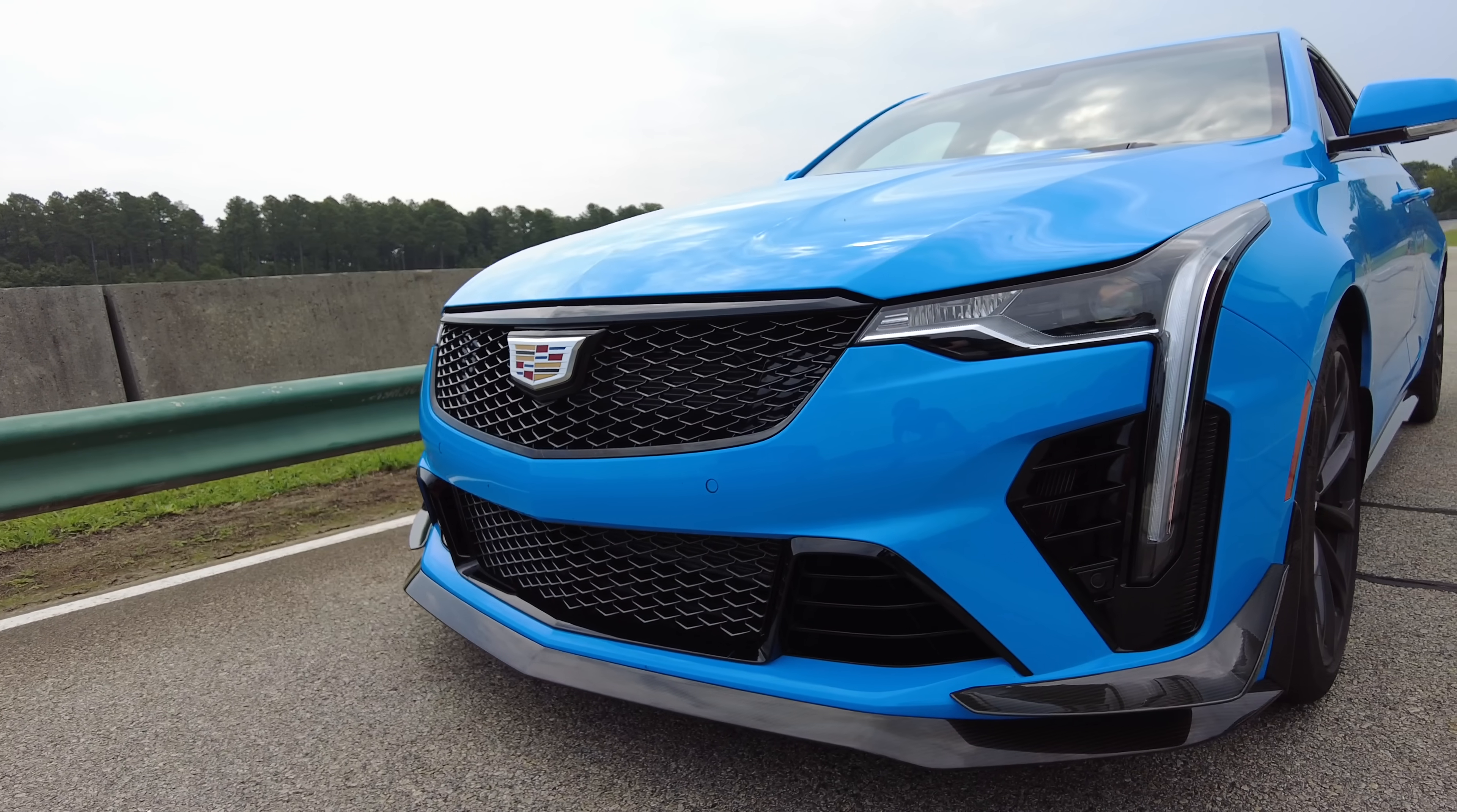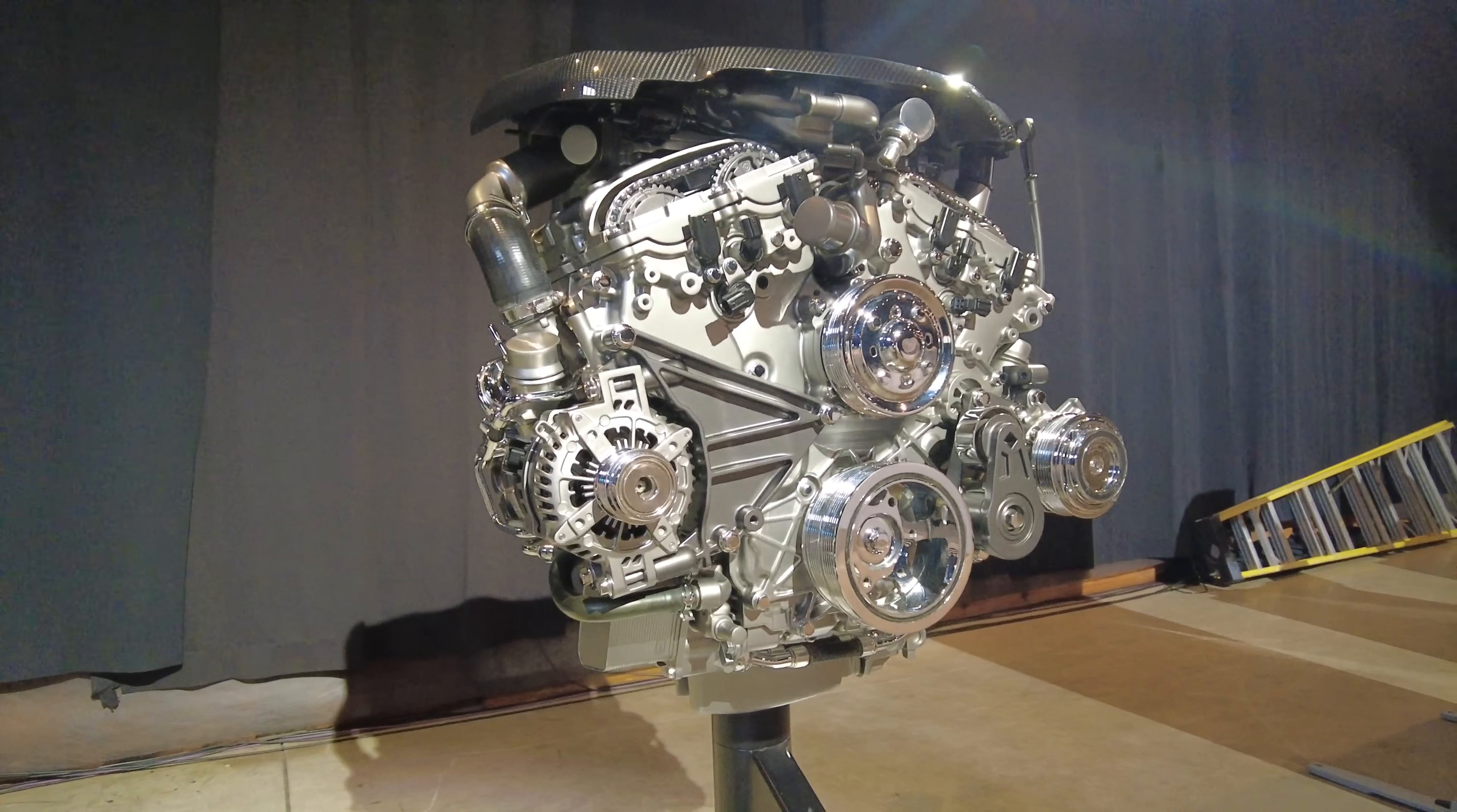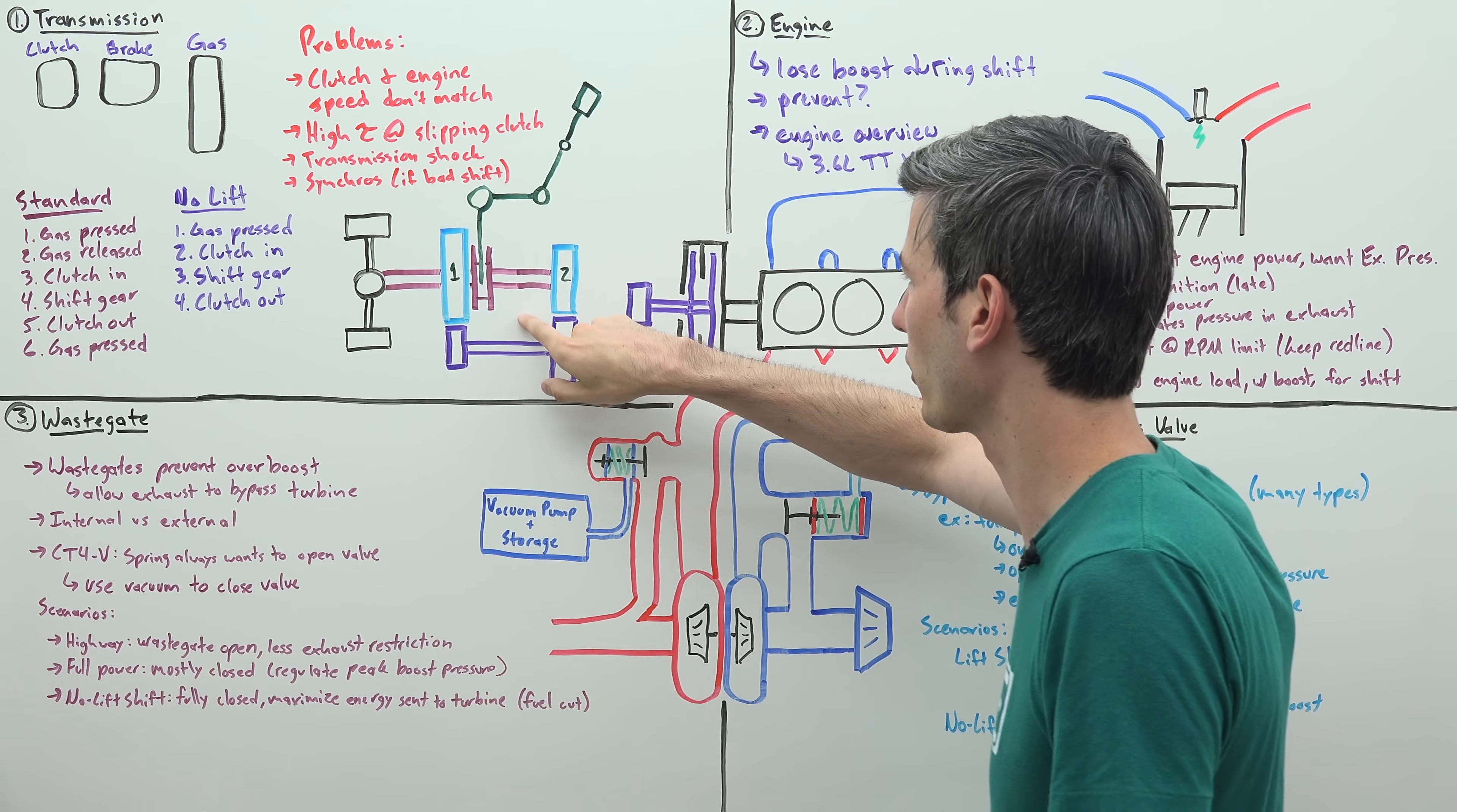So let's start with the basics and talk about how this is done in the CT4V Blackwing. So we start with the engine, a 3.6 liter twin turbocharged V6. So we're just looking at half of the cylinders right here. So those cylinders are feeding a twin disc clutch. You can see the two discs in the clutch there.